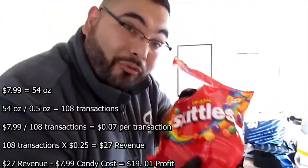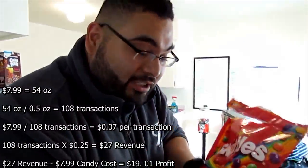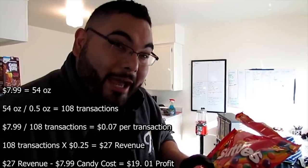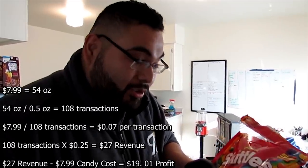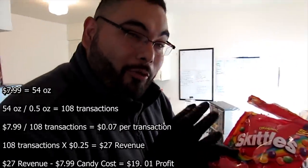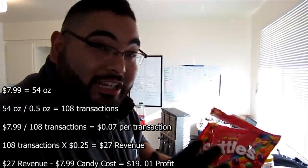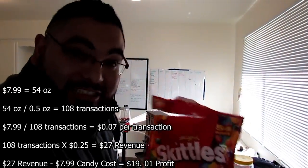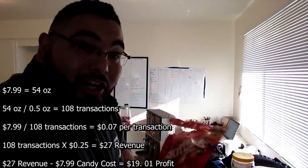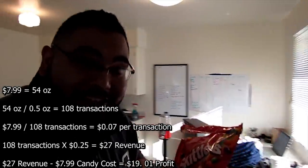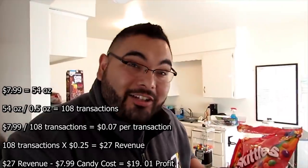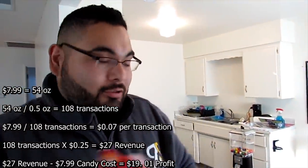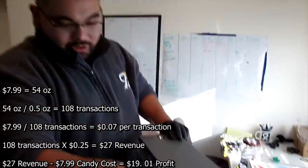This is 54 ounces, so do the math again. The machines give out about half an ounce, so it will be 108 transactions. Divide how much this costs by 108 and that's your cost per half ounce.